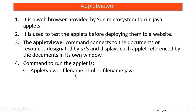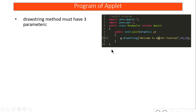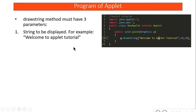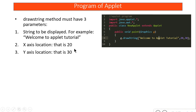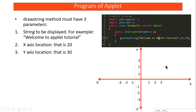Let's see the applet program. I've imported the applet package, imported the AWT package, created a new public class inheriting the Applet class, created a paint method, and inside it used the drawString method. The drawString method requires three parameters: the message you want to display inside double quotes, followed by the x and y location where you want to display the message.